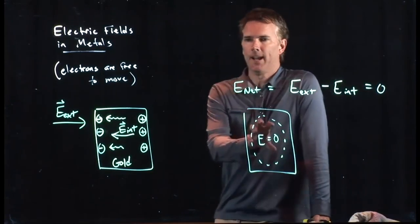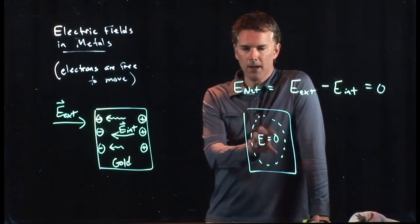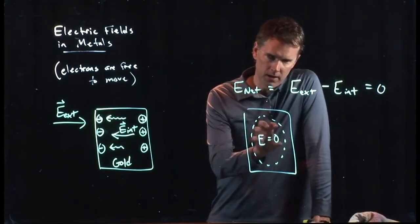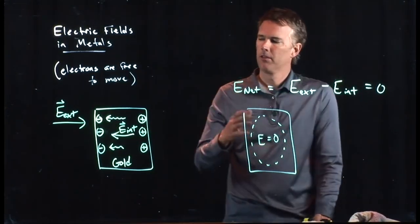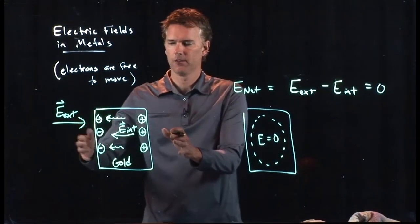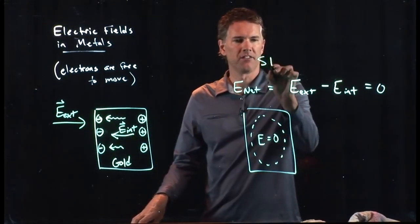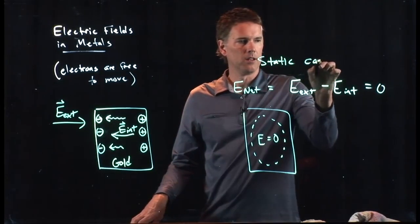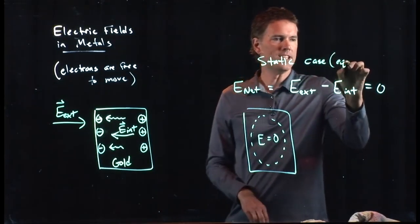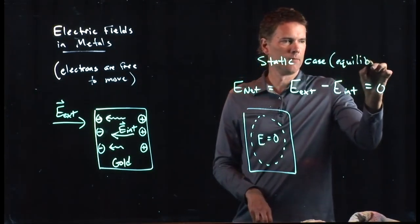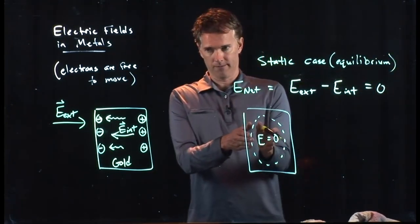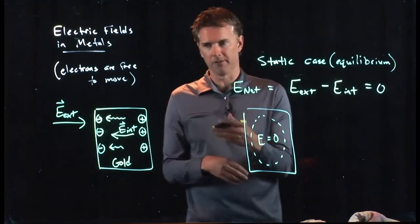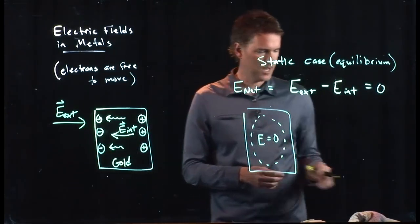You know it has to be zero. Why? Because if it wasn't, then charge would still be moving. So once the charge separates and we have the static case, which is you've reached equilibrium, then there's no more electric field in there. Because if there was, charge would still move.